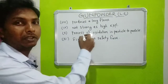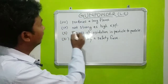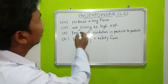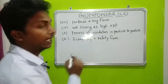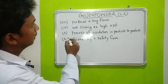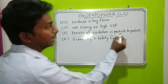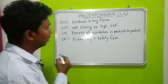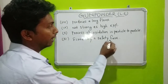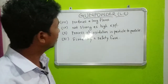Gunpowder produces a long flame and it is not as strong as a high explosive. The process of oxidation is particle to particle, and it is fired by a safety fuse.